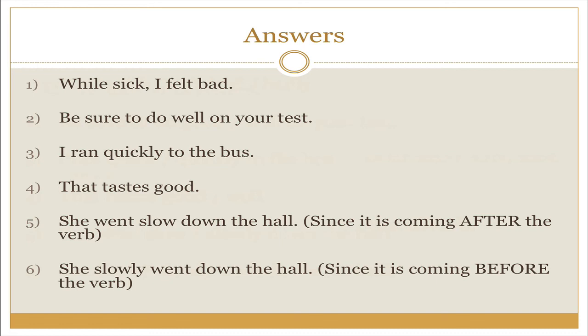Number three: I ran quickly to the bus. How did I run? Quickly. Number four: that tastes good. This is one of those feeling-linking-verb situations, and we should use the adjective form, not the adverb. If we said that tastes well, it would suggest they did a good job of tasting, which is rather strange. Number five: she went slow down the hall — because it comes after the verb, we use slow. Contrast that with number six: she slowly went down the hall. Since slowly comes before the verb, we use the adverb form.